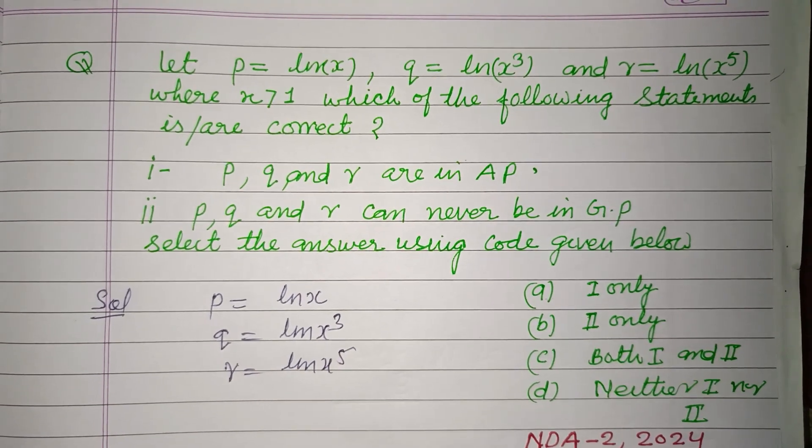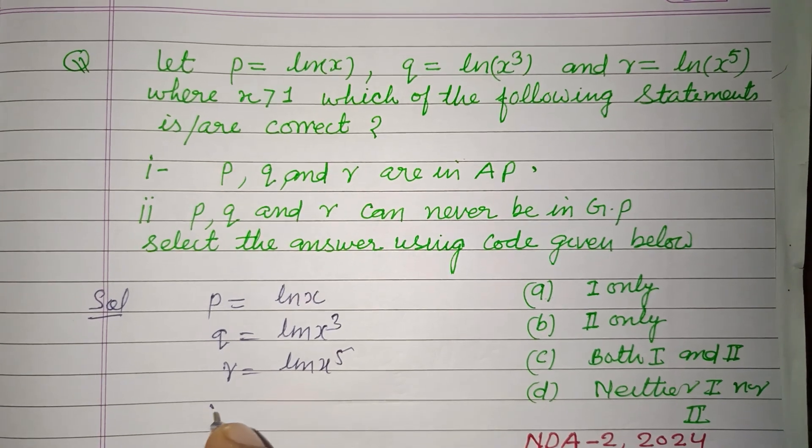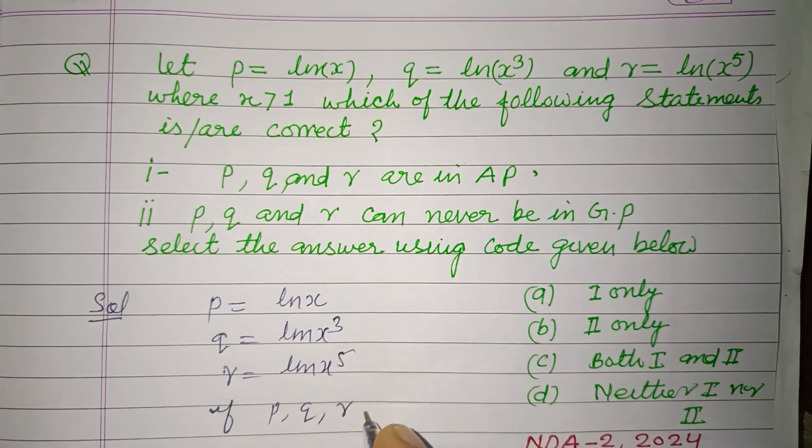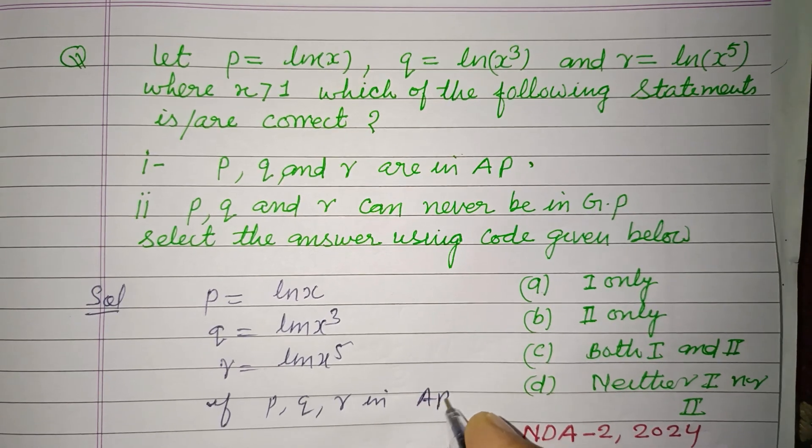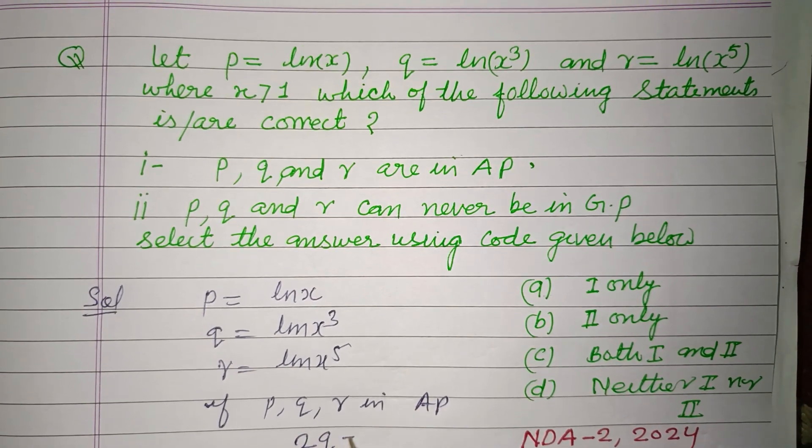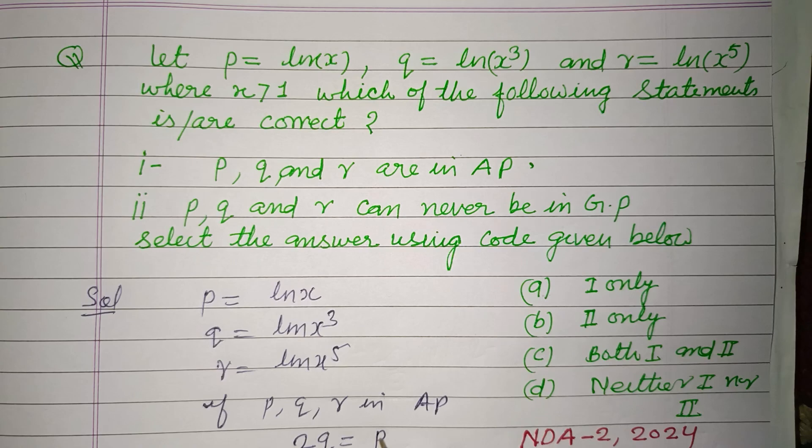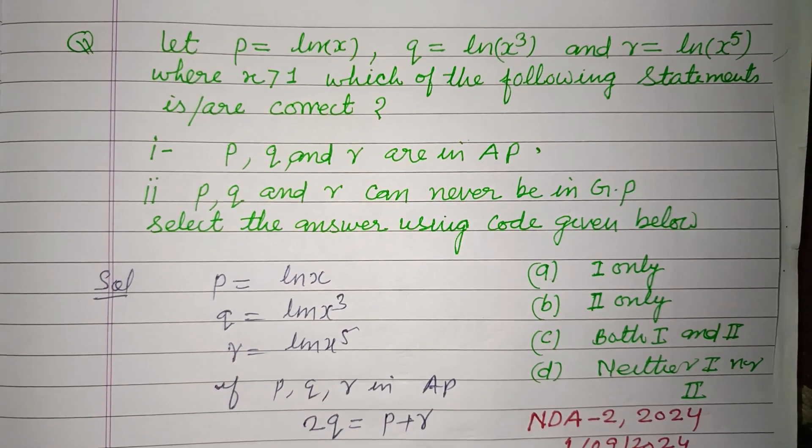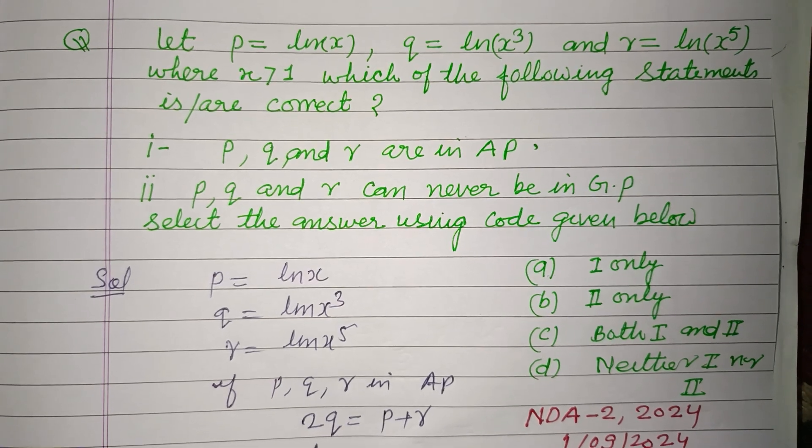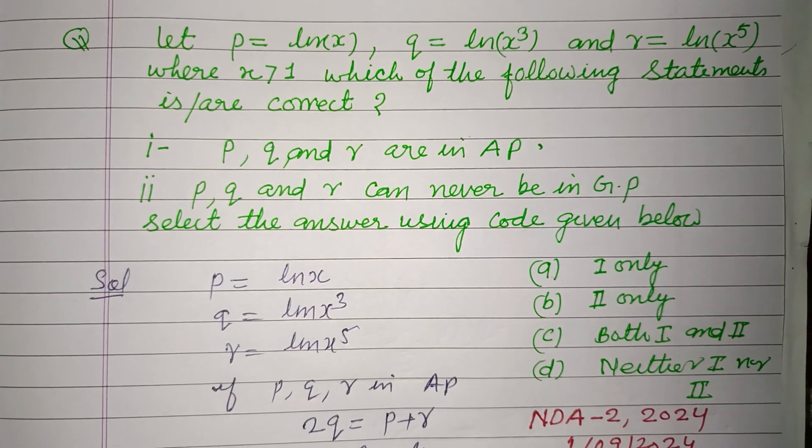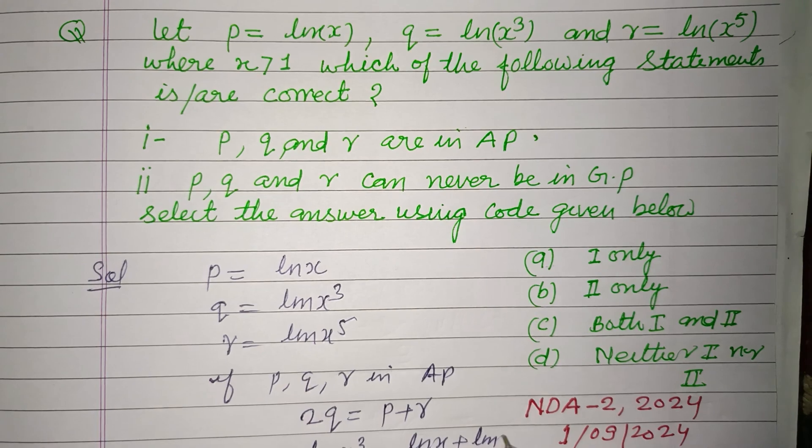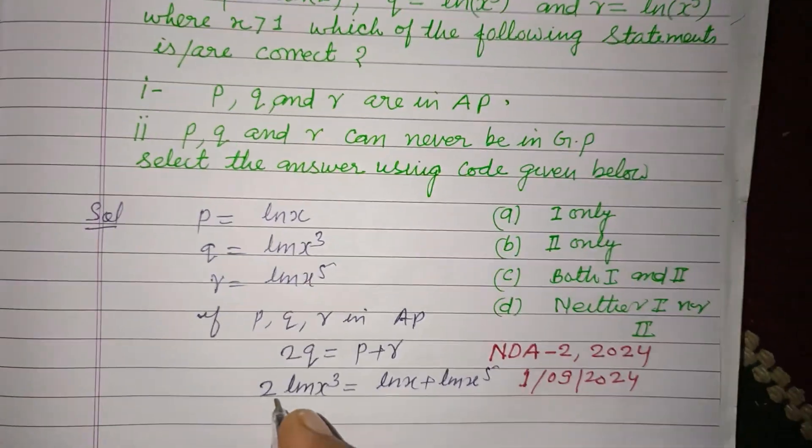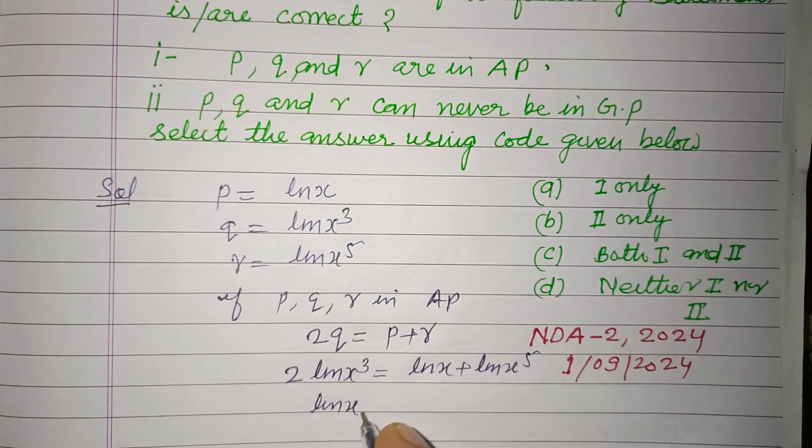If p, q, r are in AP, then they follow the condition 2q = p + r. Now putting the values: 2q = 2·ln(x²), p = ln(x), and r = ln(x⁵).